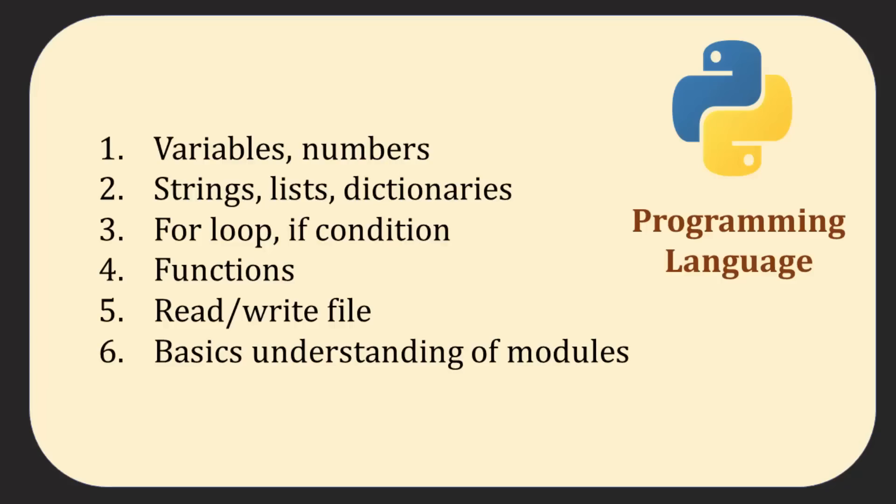It all starts with a programming language. Data science is a process of drawing insights from data and you need a programming language to operate on that data. Python and R are the two most popular languages used by data scientists. I prefer Python because once you learn it you can do full-stack application development. You don't want to master all of Python — just learn a few key topics: variables and numbers, basic data types such as strings, lists, and dictionaries, control flow structures such as if and for loops, functions, and some basic understanding of Python modules as well as reading and writing files.